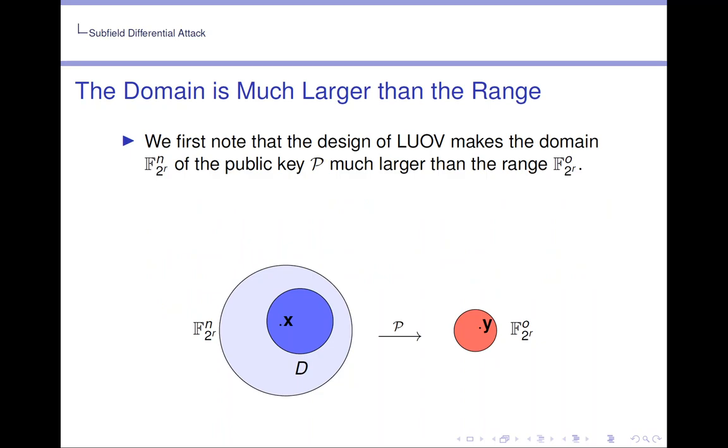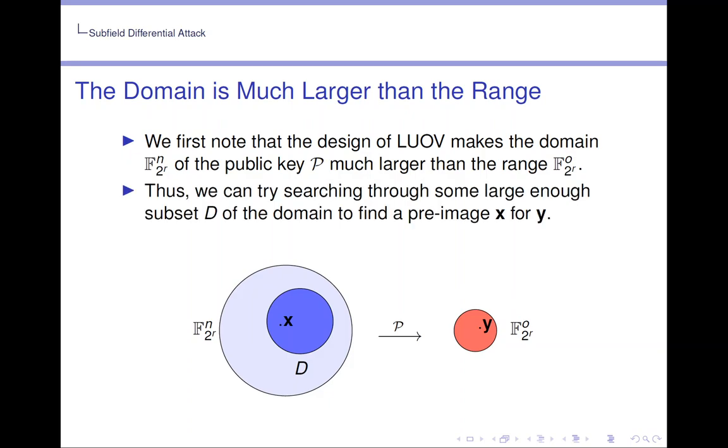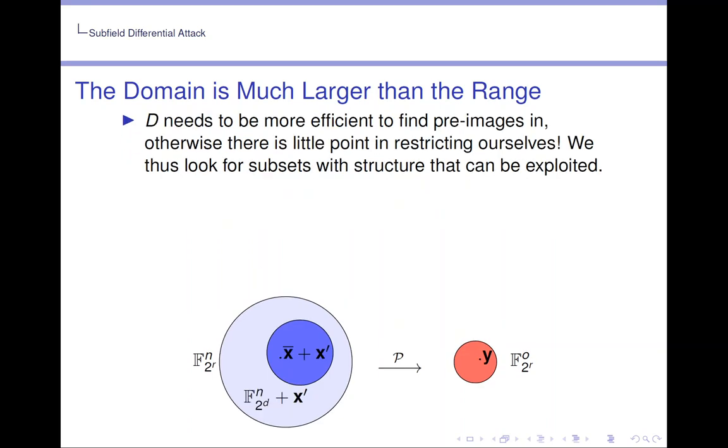We first note that the design of LUOV makes the domain F_{2^r}^n with the public key P much larger than the range F_{2^r}^o. Thus we can try searching through some large enough subset D of the domain to find the preimage x for y. D needs to be more efficient to find preimages in, otherwise there is little point in restricting ourselves. We thus look for subsets with structure that can be exploited.